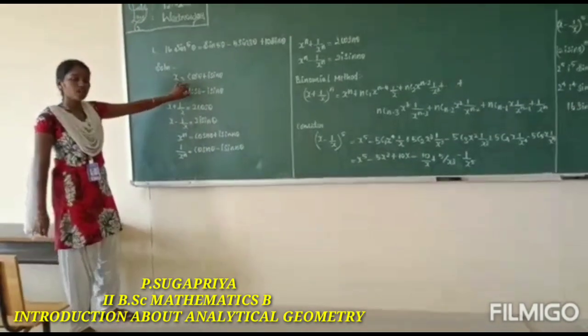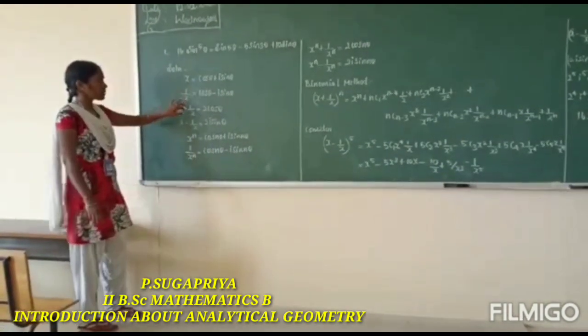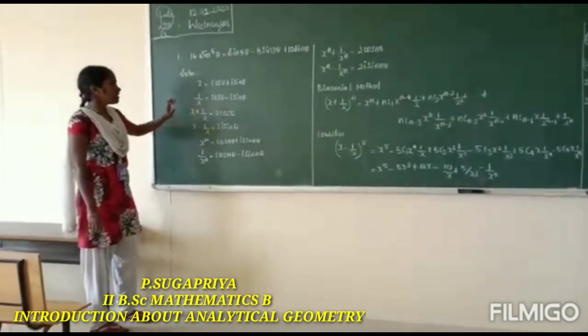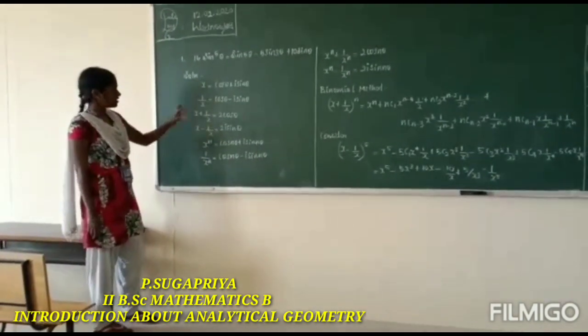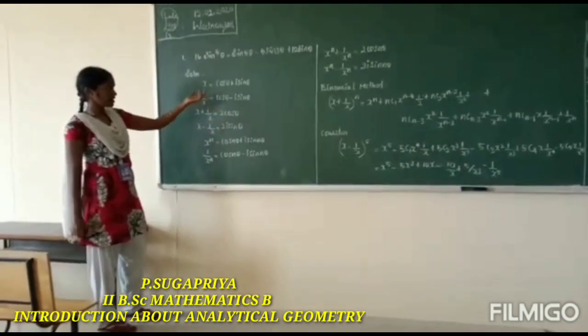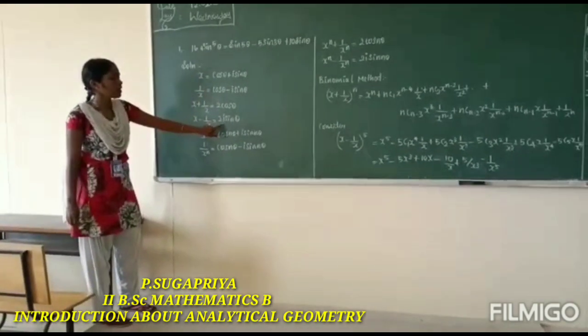We know that x equals cos theta plus i sin theta, and 1 by x equals cos theta minus i sin theta. When we add these, we get 2 cos theta. When we subtract, we get 2i sin theta.